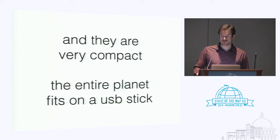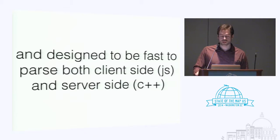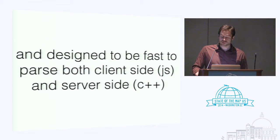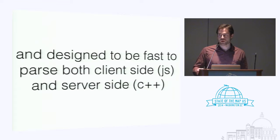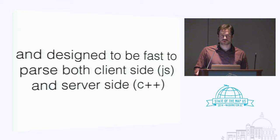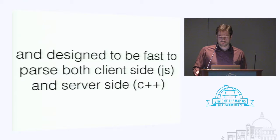We did some early tests last year and found that we could fit all the data we needed for our map styles on a USB stick for the whole world. The trick is we only rendered vector tiles down to zoom level 14. Last thing is that vector tiles are designed to be fast, both to parse client-side and server-side. If you saw my talk at State of the Map last year, my role in the design of vector tiles until last year was server-side focused, but I have team members thinking about client-side rendering too.